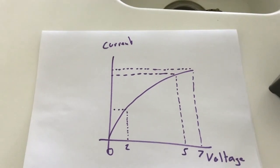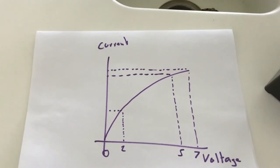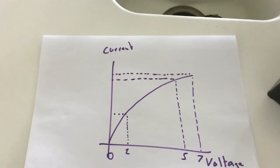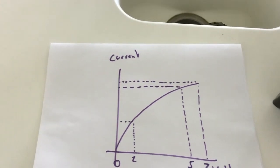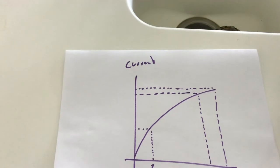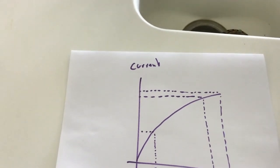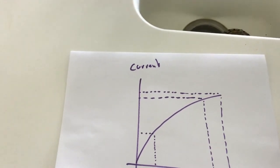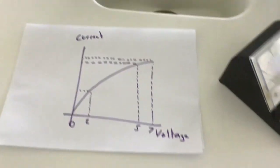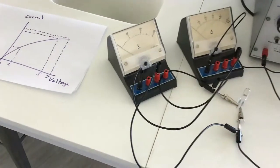The heat from the bulb causes the atoms inside the filament to vibrate more, and they get in the way of the electrons as they're trying to flow through the filament. That's why the resistance has increased. Okay guys, hope that helps. Bye for now.